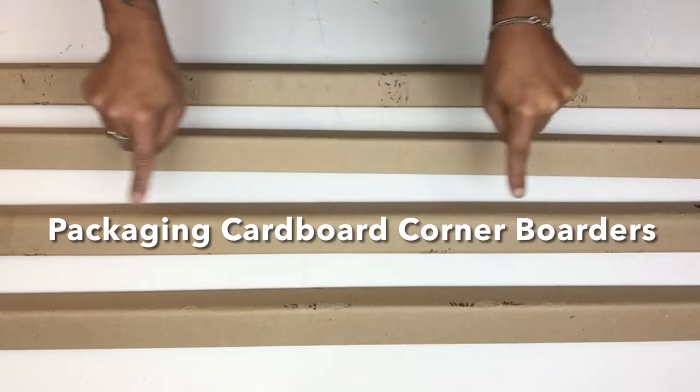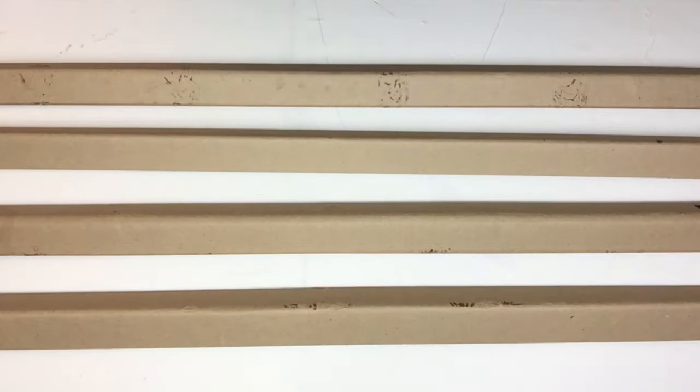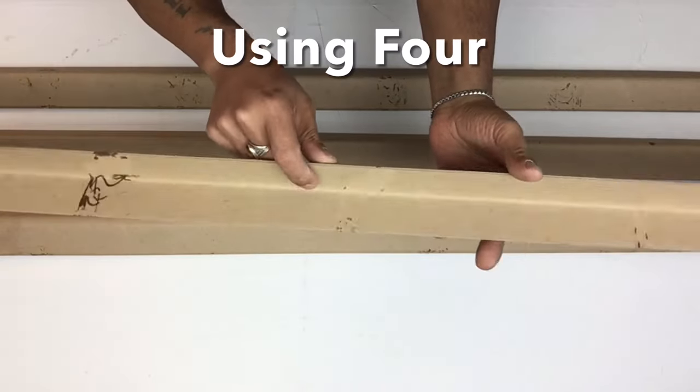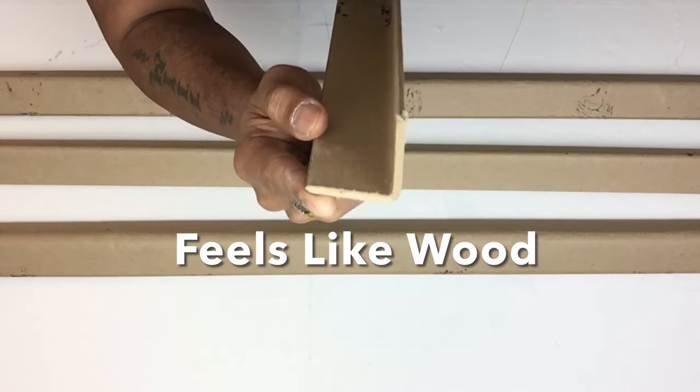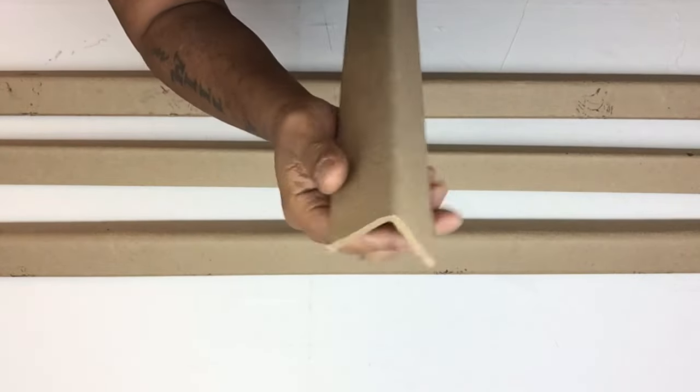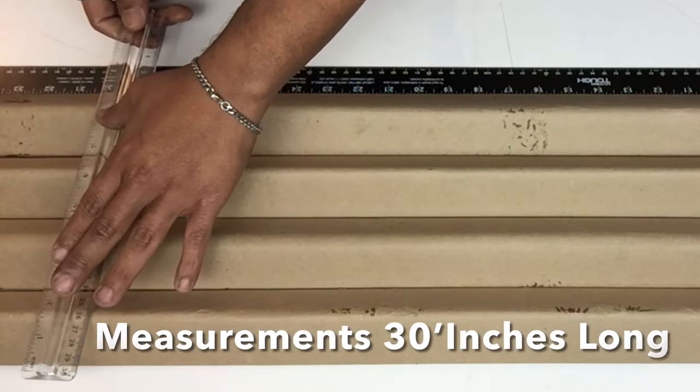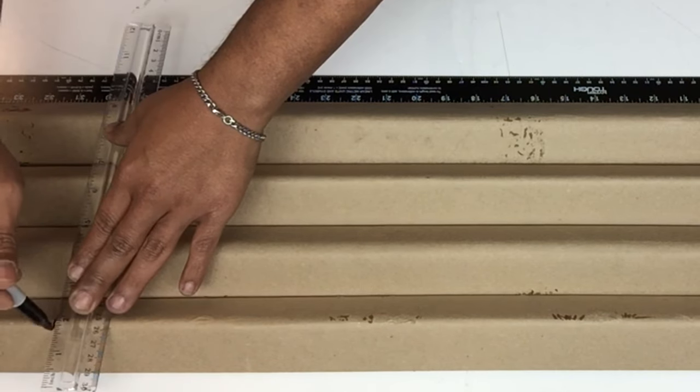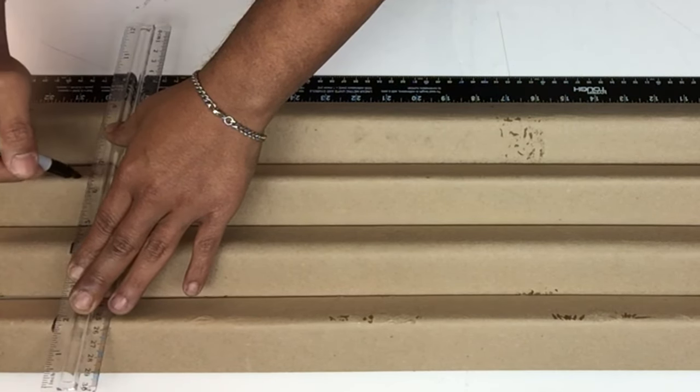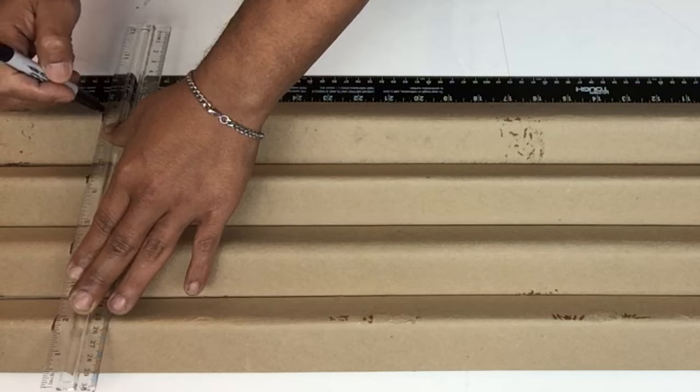Next I'll be using packaging cardboard corner borders and these are very strong and they also feel like wood. Next I'll be taking measurements and I'll be cutting them thirty inches long each. I had these borders, they came in a box from a TV I purchased, but you may also find these at your local Home Depot.